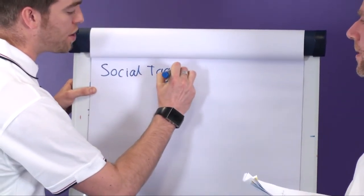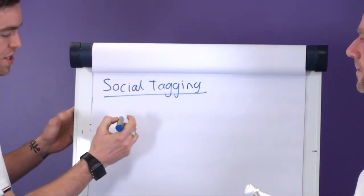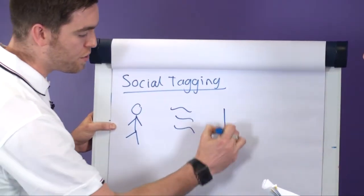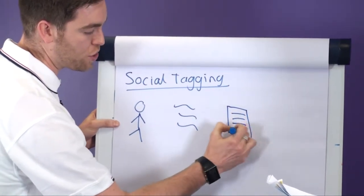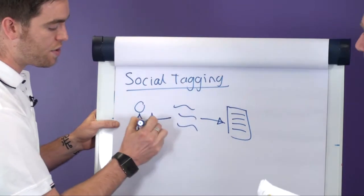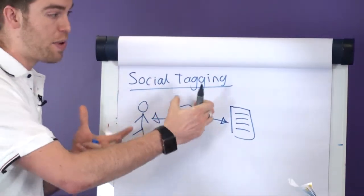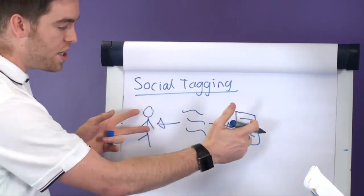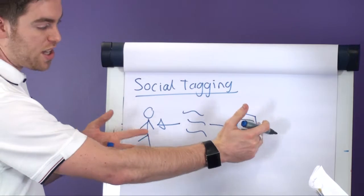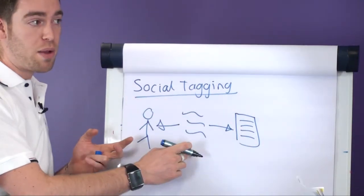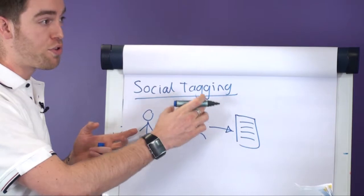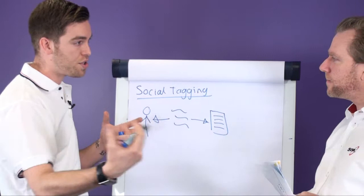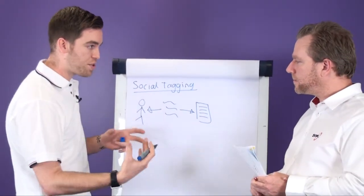The idea behind social tagging is that it's essentially a series of terms or keywords that link the user to, let's say, a document or a list item. Now these terms are predefined by the user on the fly, so they can just tag something with whatever terms they see fit. The benefit of these terms is they're then visible through the user's My Site. So these terms then build a tag cloud so that other users can browse the documents that that user has tagged with whatever terms.